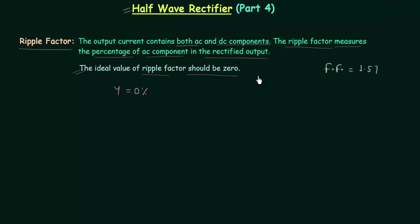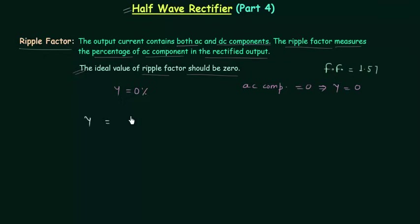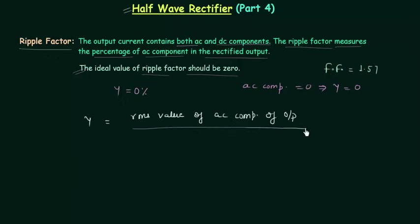We are converting AC to DC and we don't want any component of AC in our rectified output. So we want AC component equal to 0, and when this happens, the ripple factor is also equal to 0. So let's try to obtain the general expression for ripple factor. The ripple factor gamma is equal to the RMS value of the AC component of output divided by the average value of output.